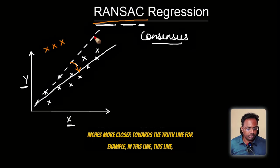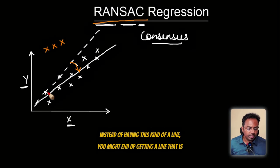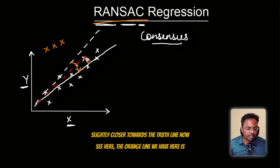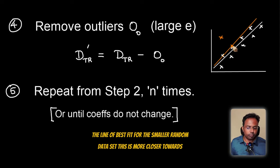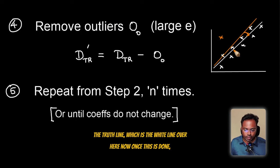So the chances are the line of fit inches more closer towards the truth line. For example, in this line, instead of having this kind of a line, you might end up getting a line that is slightly closer towards the truth line. Now see here, the orange line we have here is the line of best fit for the smaller random data set. This is more closer towards the truth line, which is the white line over here.